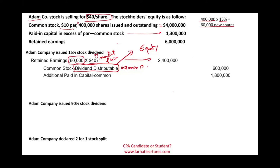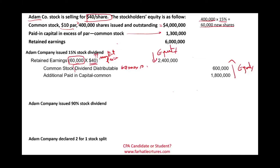Any remaining amount is credited to Additional Paid-In Capital — Common Stock. When it comes to a stock dividend, we reduce retained earnings, which is equity, then we increase two equity accounts for the same amount. We reduced equity by $2.4 million and increased equity by $2.4 million. The net effect on equity is zero — there is no net effect on the balance sheet. In contrast to cash or property dividends, stock dividends do not reduce your equity.